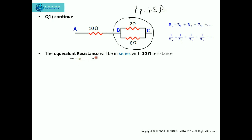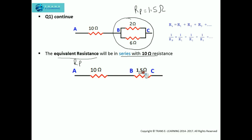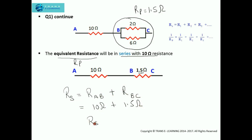This equivalent resistance RP of 1.5 ohm will be in series with the 10 ohm resistance between A and B. The equivalent resistance of the circuit, RS, will be the resistance across AB plus the equivalent resistance across BC. So this will be 10 ohm plus 1.5 ohm, giving a final answer of 11.5 ohm.